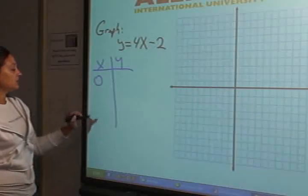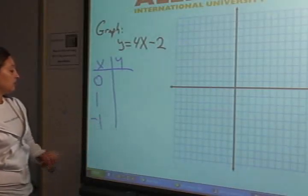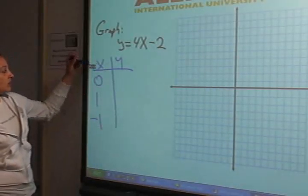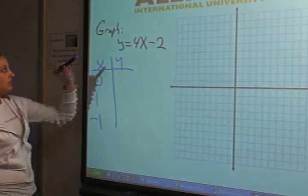So let's pick easy numbers: 0, 1, negative 1. Since we have x values here, let's plug it in.